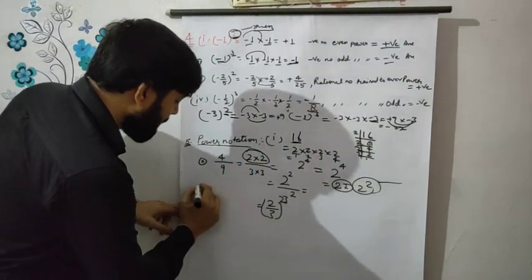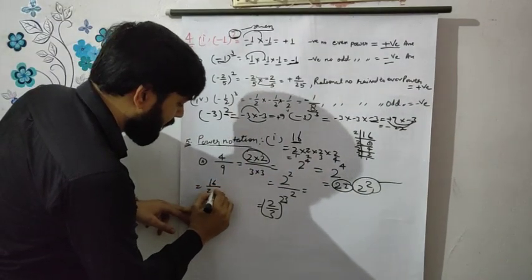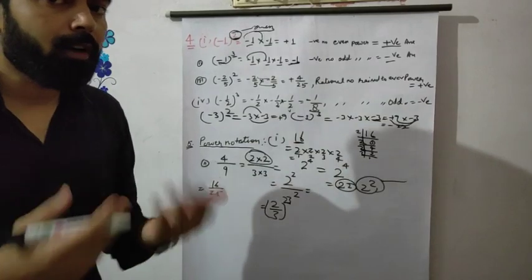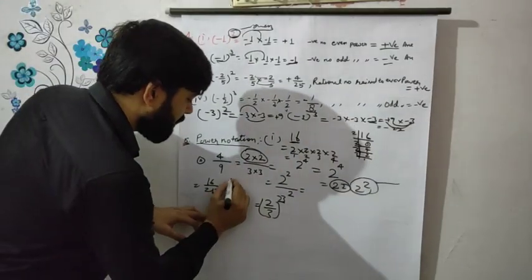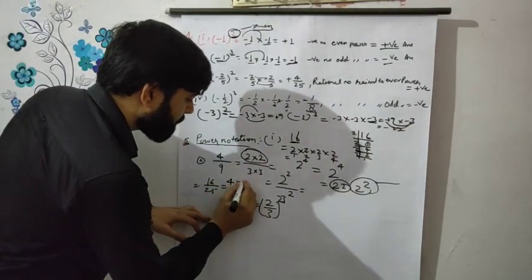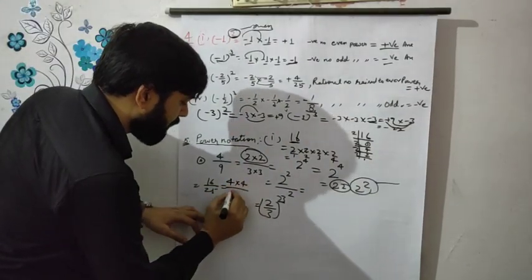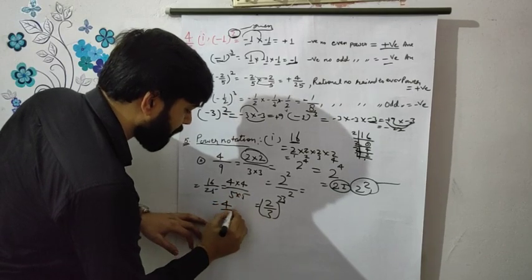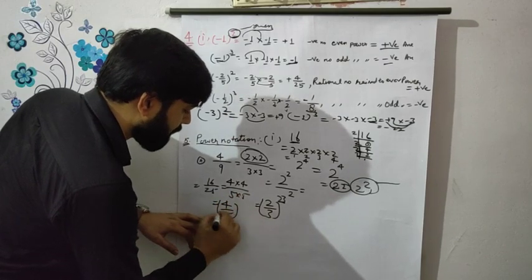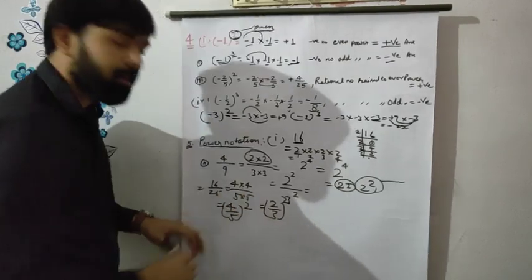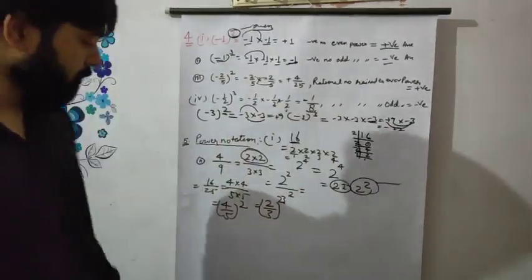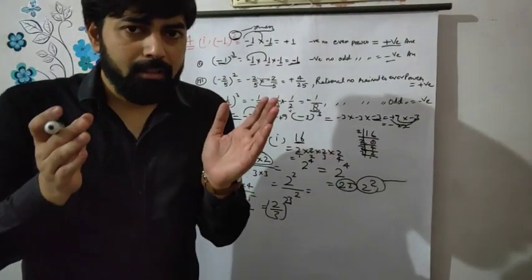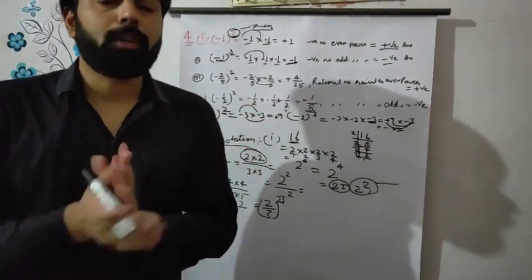Similarly for 16 upon 25: 16 = 4×4 and 25 = 5×5. So we can write this as 4 upon 5, whole to the power 2.